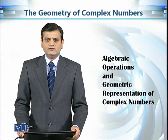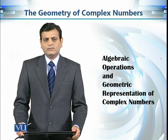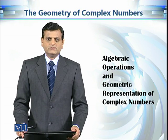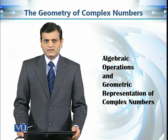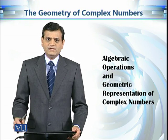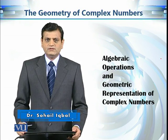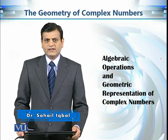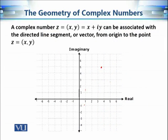So far we have seen different algebraic operations on complex numbers, such as addition and multiplication. We also know that a complex number can be represented by a point in the complex plane. So when we say we are adding two complex numbers, it means we are adding two points in the plane. This is going to be the part of our next discussion.